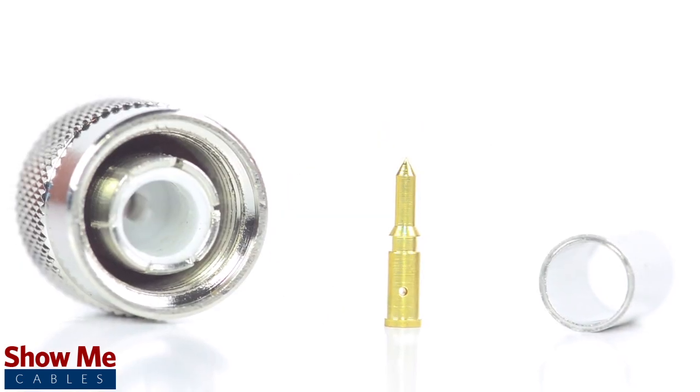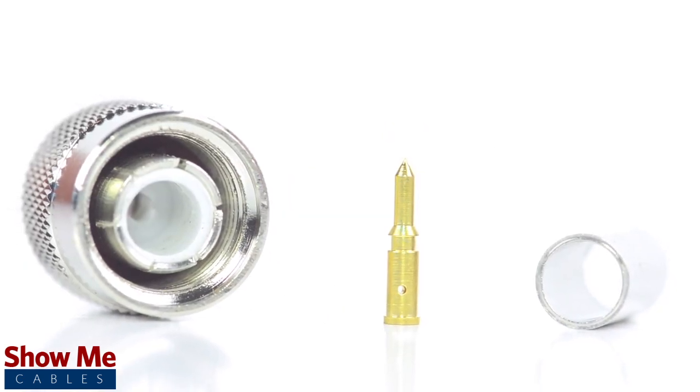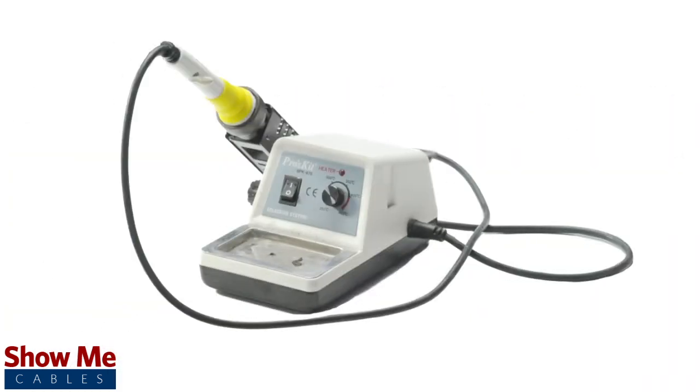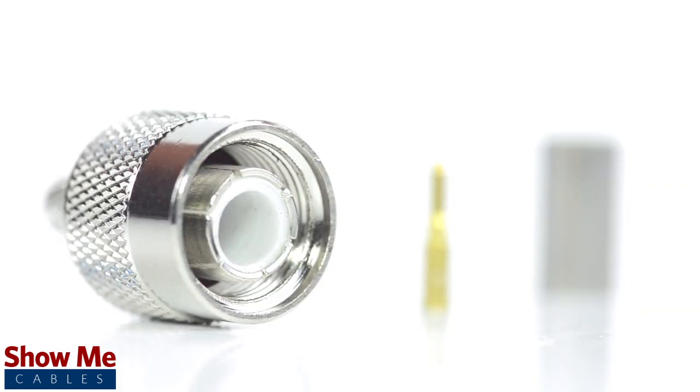The three-piece connector consists of the connector housing, the pin, and the ferrule. For this installation you will need a coax stripper, coax cable, a soldering iron, a crimp tool, and the TNC connector.